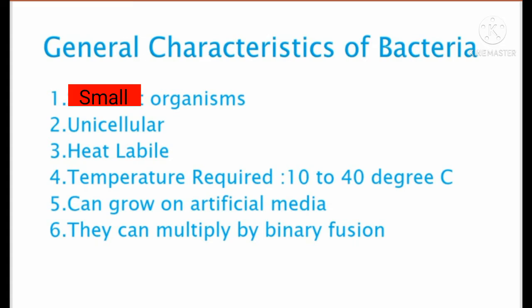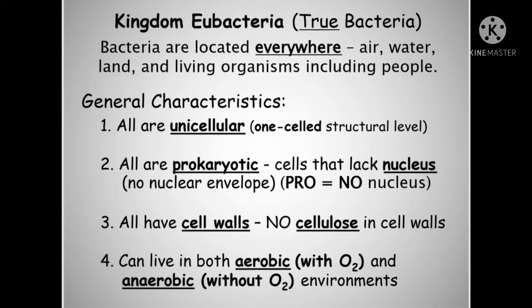General characteristics of bacteria: they are small organisms, they are unicellular in nature, they are heat labile, the temperature required is 10 to 40 degrees Celsius. They can grow on artificial media, they can multiply by binary fission. Eubacteria is also called true bacteria. Bacteria are located everywhere — air, water, land, and living organisms including people.